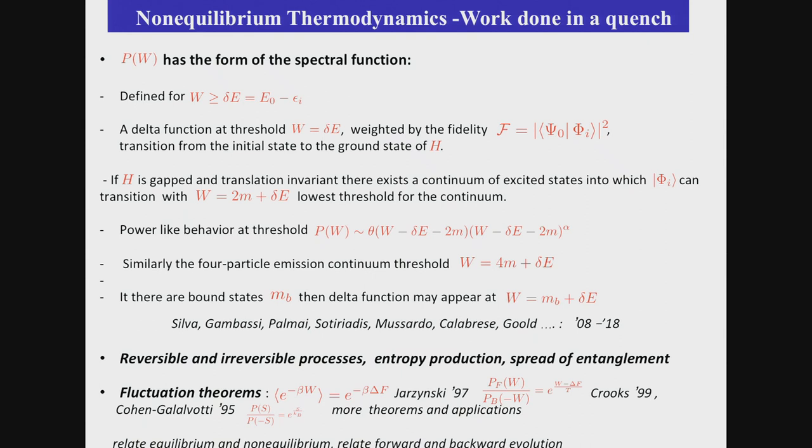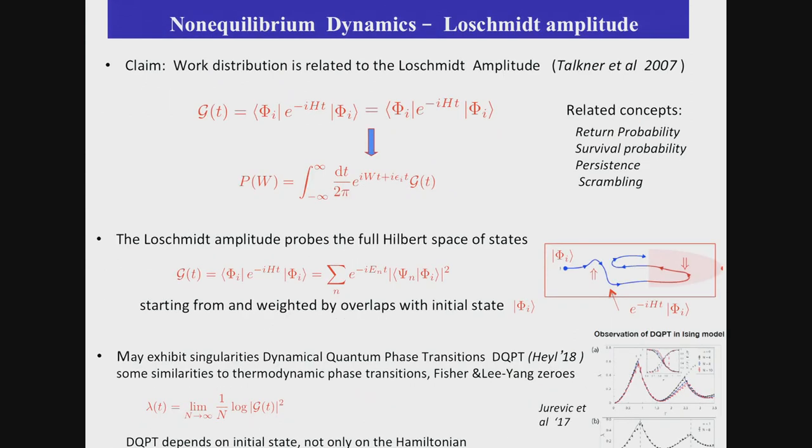The question is if one carries out the processes in a reversible, irreversible way, how much entropy is produced, how the entanglement is spreading. There are beautiful fluctuation theorems that relate various equilibrium and non-equilibrium relations, how the system moves forward or backwards in time, questions that I'm not going to go into. Okay, so let me now begin by introducing the main actor, which is the Loschmidt echo. Loschmidt, of course, and his debates with Boltzmann have a long history.